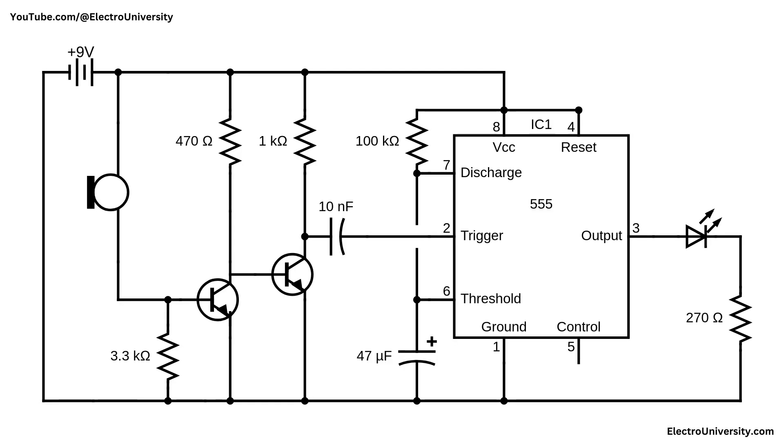Let's dive into the circuit and break it down step by step. This circuit is a clap switch that uses a microphone, transistors, and a 555 timer IC to detect sound and briefly turn on an LED. The microphone acts as a sensor, converting the sound of a clap into a small electrical signal. However, this signal is too weak to trigger the timer directly, so it is first amplified using a two-stage NPN transistor amplifier.